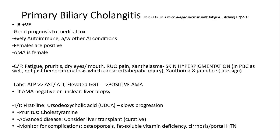Think primary biliary cholangitis in a middle-aged female with fatigue and itching. Symptoms include fatigue, pruritus, and skin hyperpigmentation or xanthelasma, with lab findings showing elevated ALP and GGT. Treatment involves ursodeoxycholic acid, which leads to slow disease progression. Cholestyramine is used for pruritus, and possibly liver transplant in advanced cases.